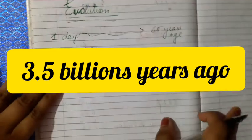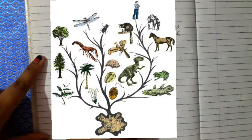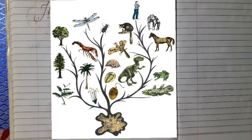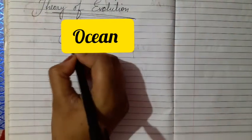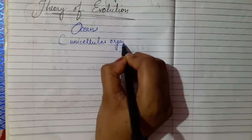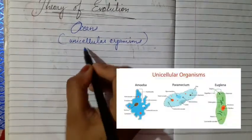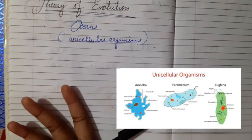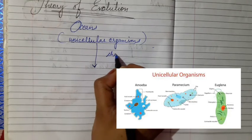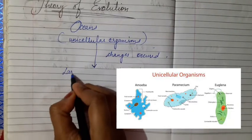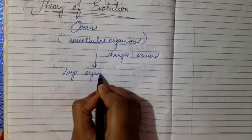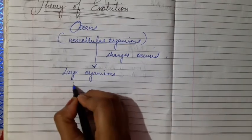We will be studying about the theory of evolution. This theory says that living material first occurred in the ocean, and these were unicellular organisms. After some years, changes occurred which led to larger organisms and multicellular organisms.